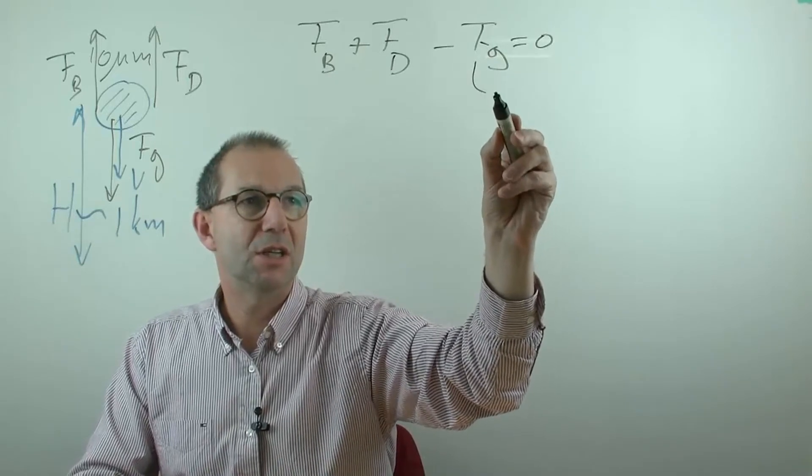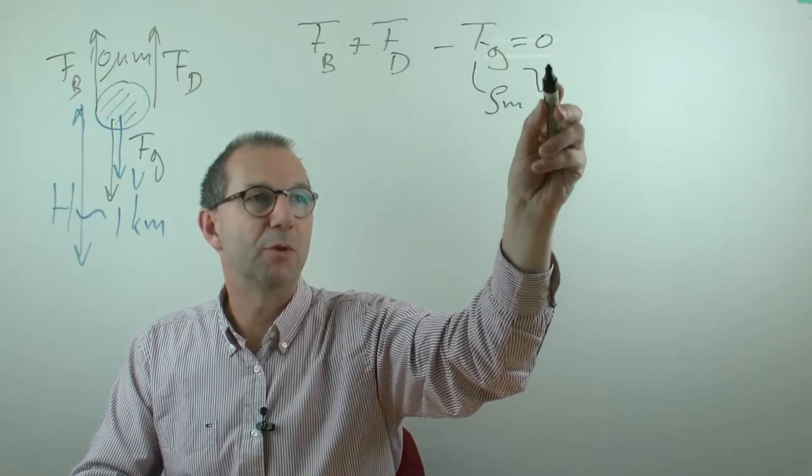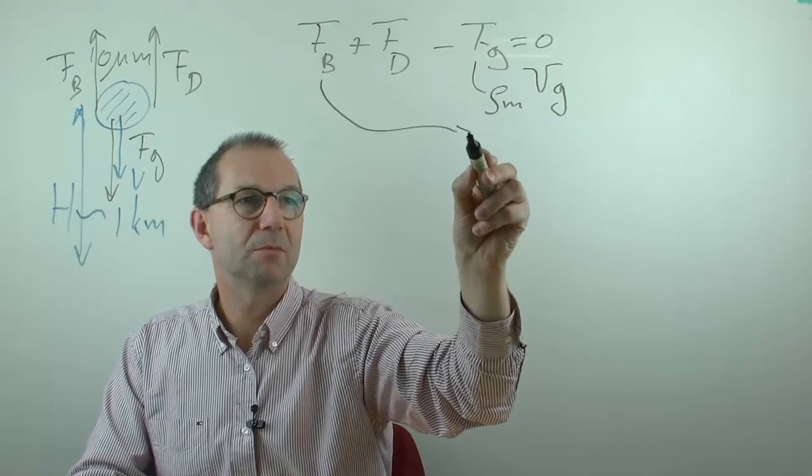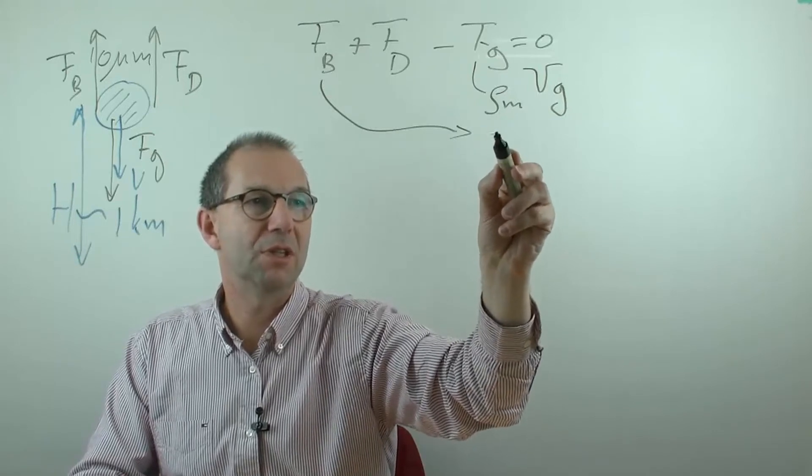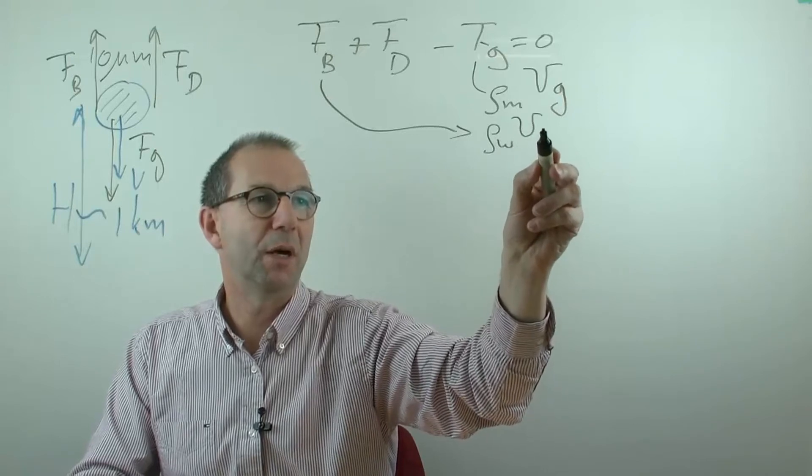This is the density of the microorganism times its volume times g. Archimedes told that this is the density of the water times the volume of the particle times g.